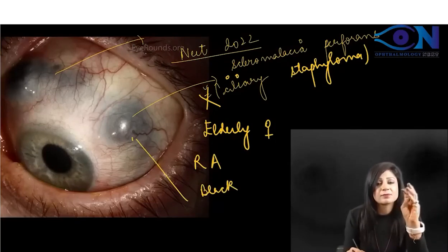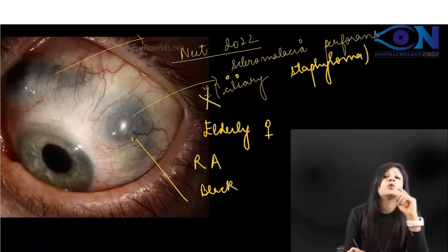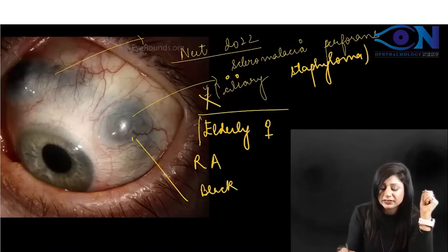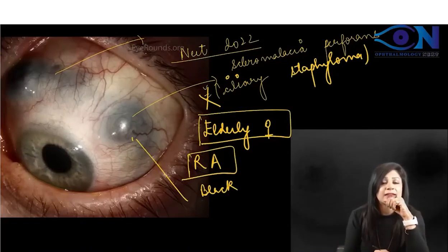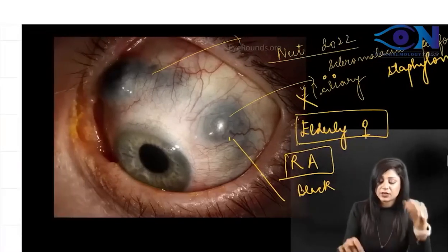Ciliary staphyloma will only be in the ciliary region. When you have an elderly female with rheumatoid arthritis showing these findings, you know it's a case of scleromalacia perforans. This is a kind of scleritis.